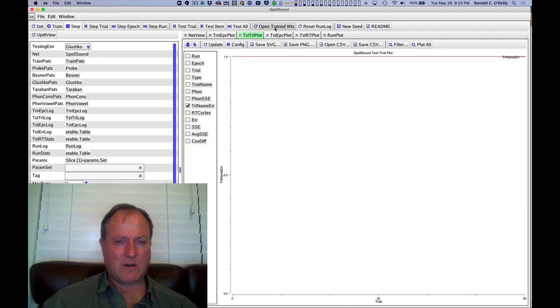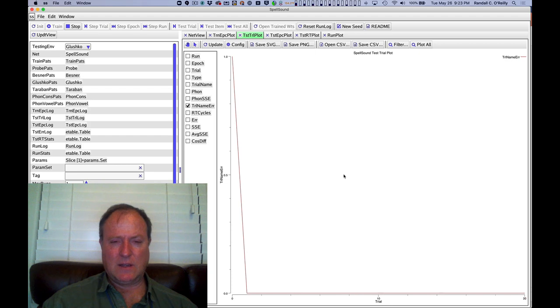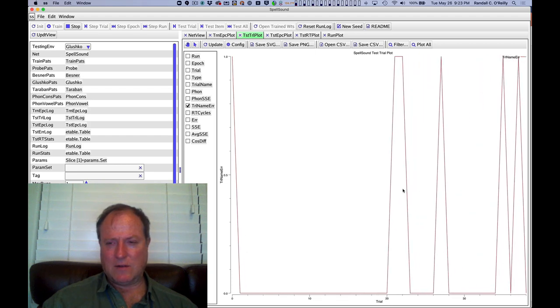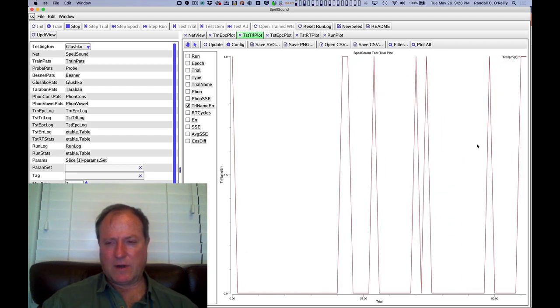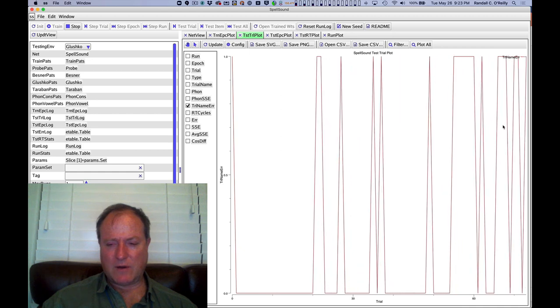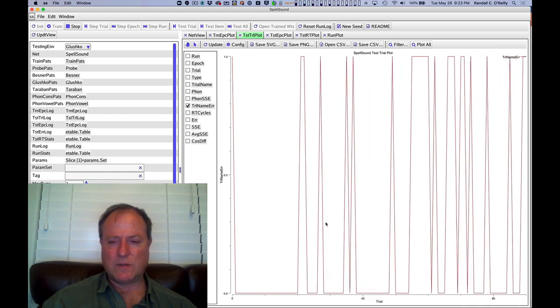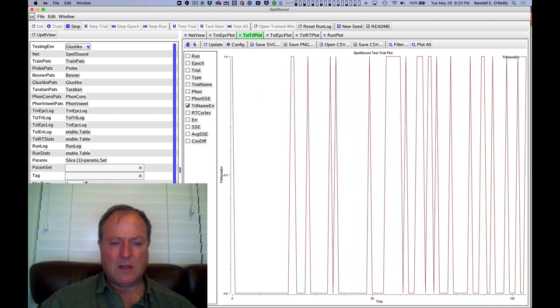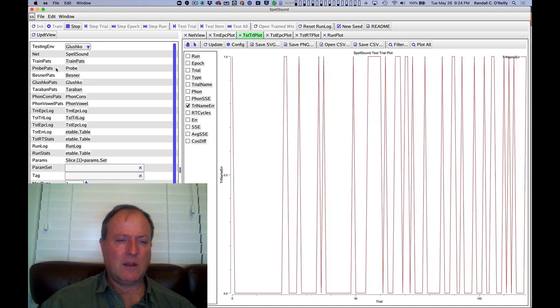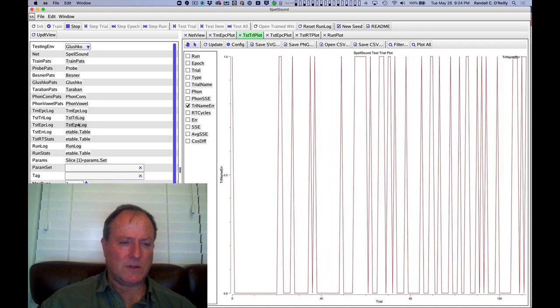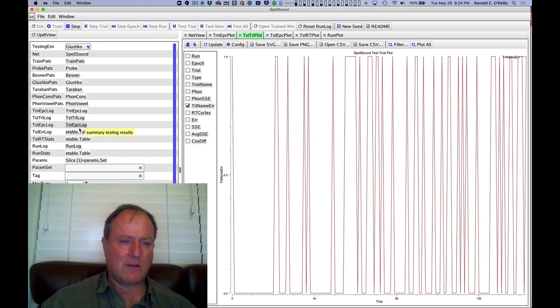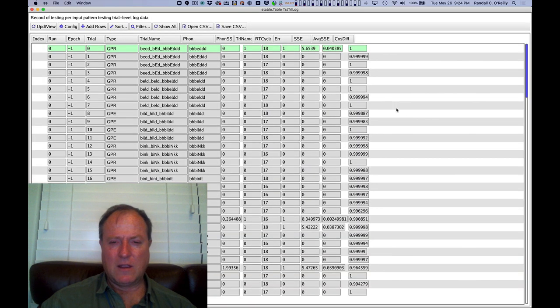Select these different non-words here and test it and look at these testing results. And it records whenever errors are made. And it does make a few errors. As you can see, performance is not perfect in that table. And you can look at the results in the test error log, test trial log.